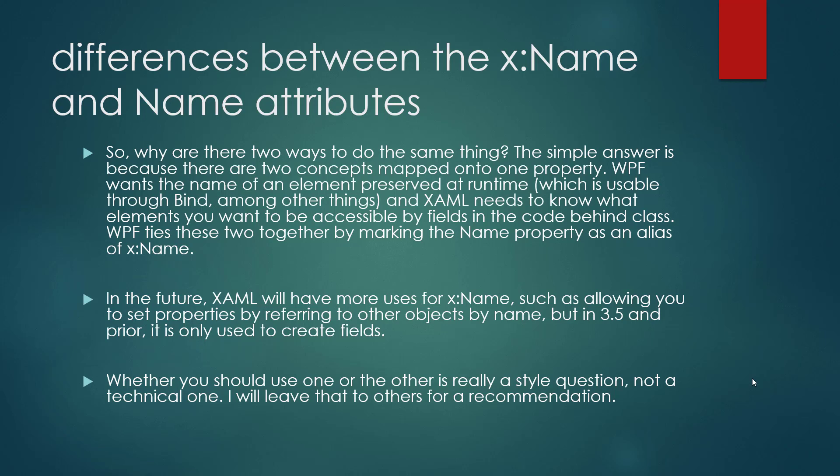In the future, XAML will have more uses for x:Name, such as allowing you to set properties by referring to other objects by name. But in .NET 3.5 and that period, it is only used to create fields. Whether you should use one or the other is really a style question, not a technical one. Thank you for watching this video, and keep watching all other videos.